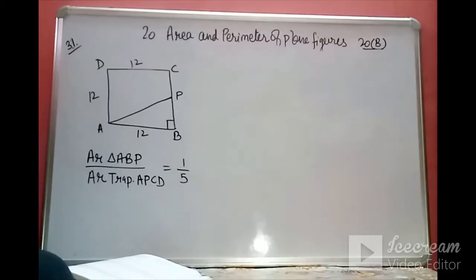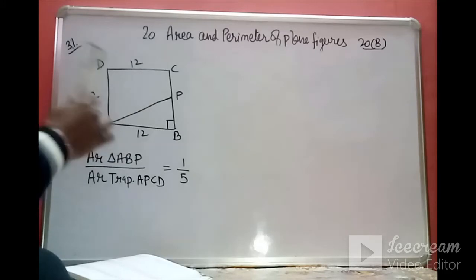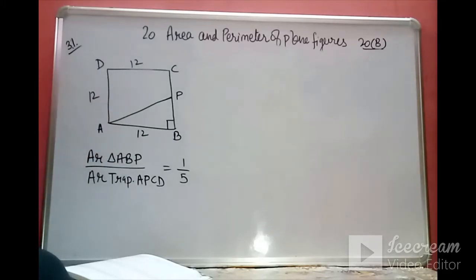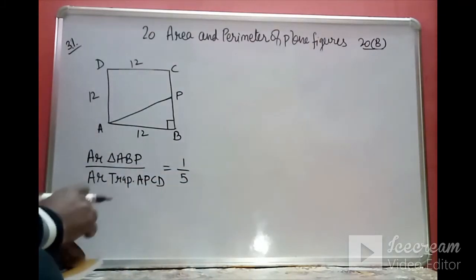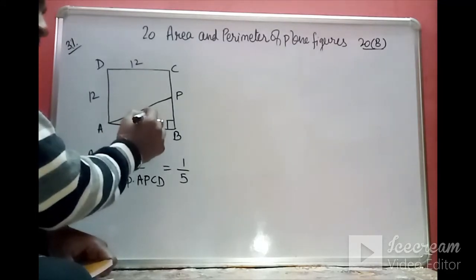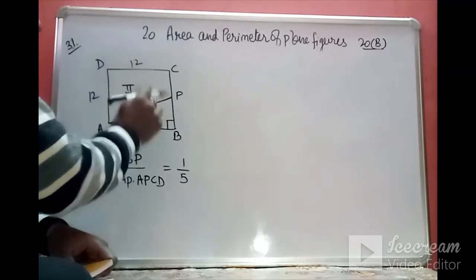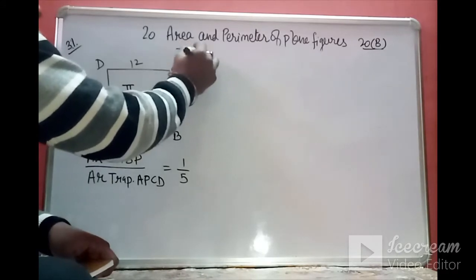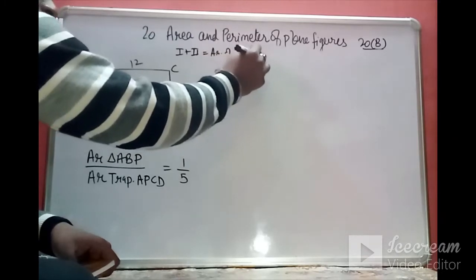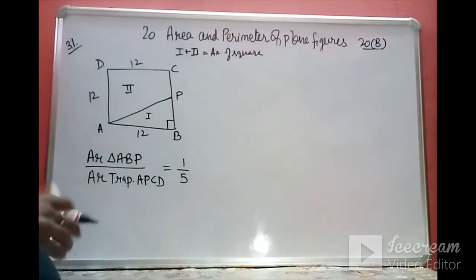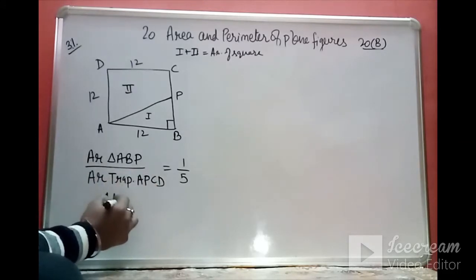Square ABCD has each side 12 cm. P is a point on BC such that the area of triangle ABP to the area of trapezium APCD is in the ratio 1 to 5. We have to find the length of CP. We know that the two areas combined give the area of the square, with area 1 and area 2 forming the complete square.